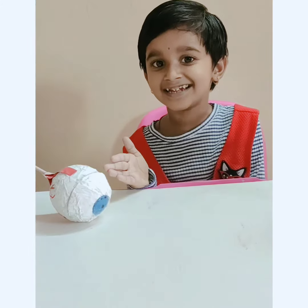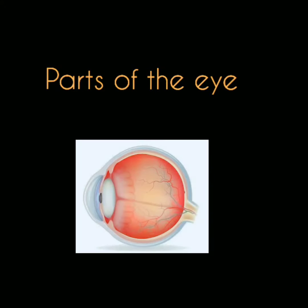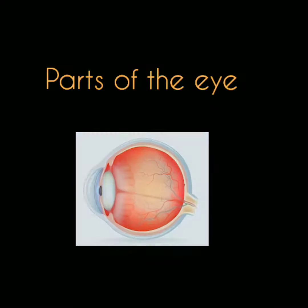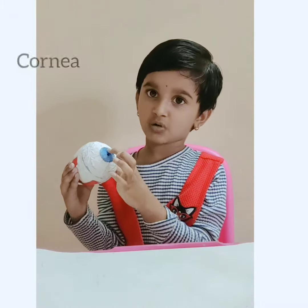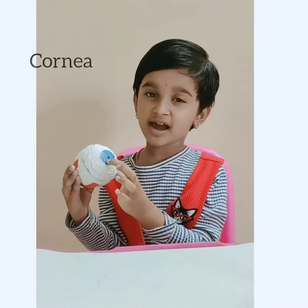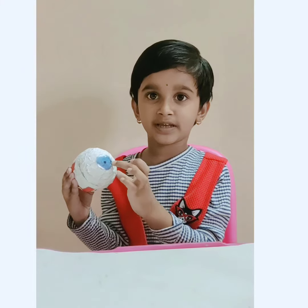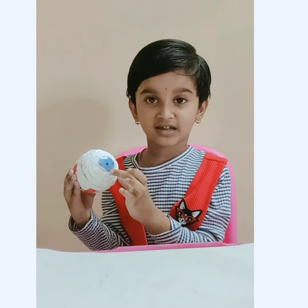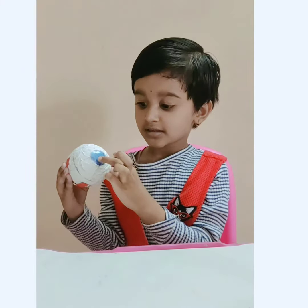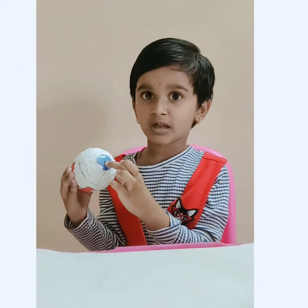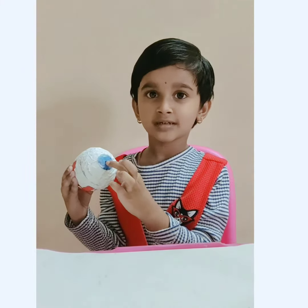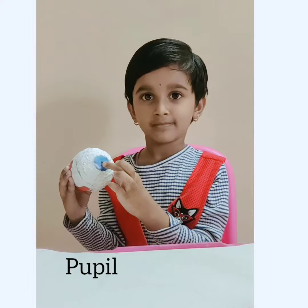This is our eye. In front is the cornea. The iris will be in different colors. The center black one is the pupil.